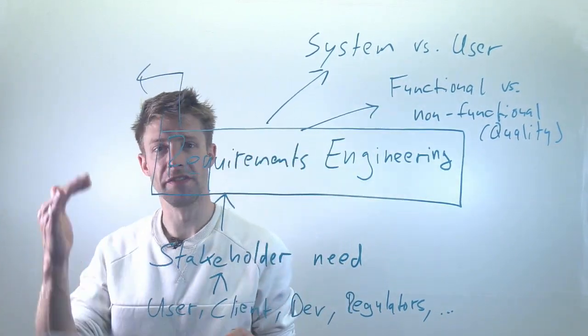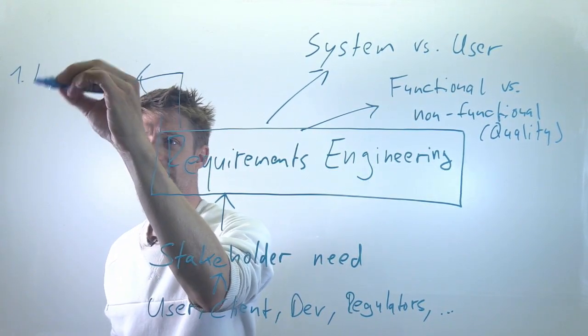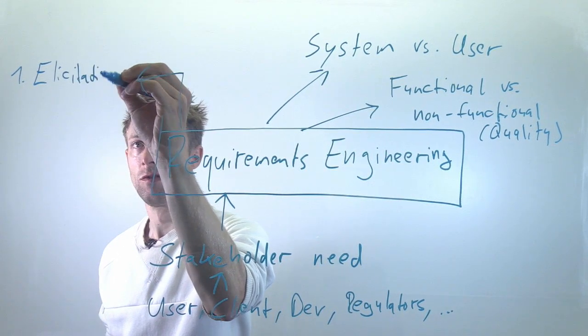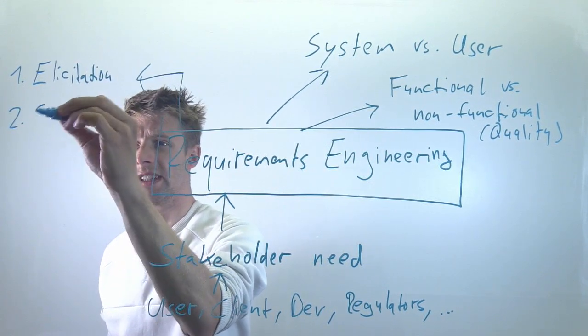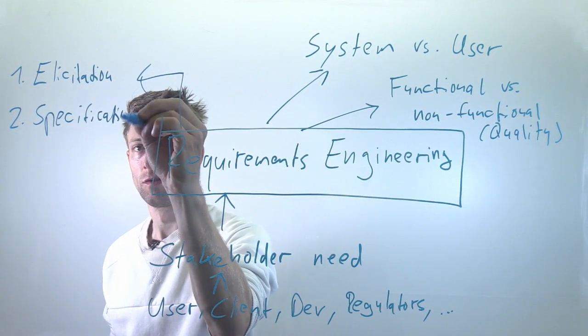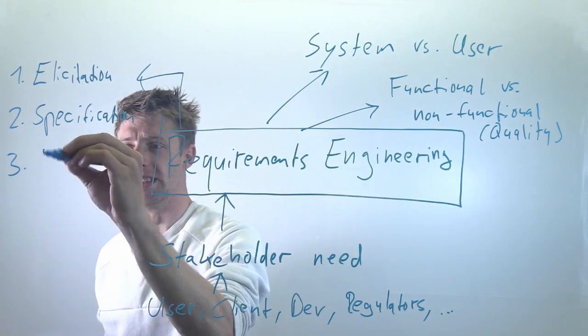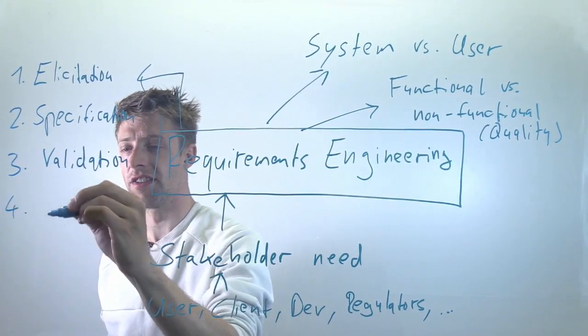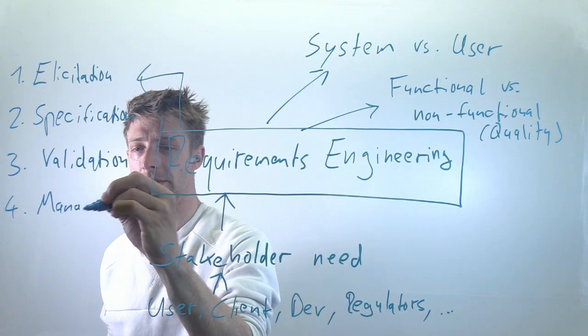What does it actually mean to do requirements engineering? What you see very often is a distinction in four different activities, and they are: requirements elicitation, requirements specification, requirements validation, and finally, requirements management.